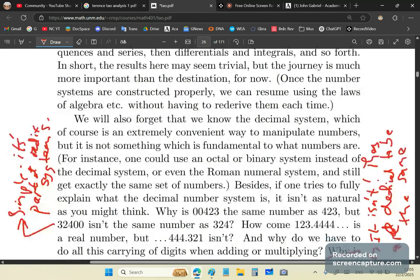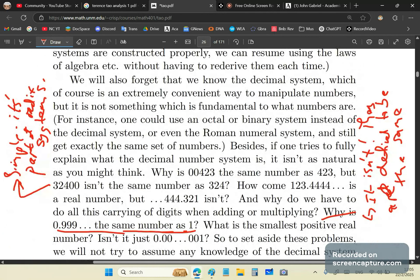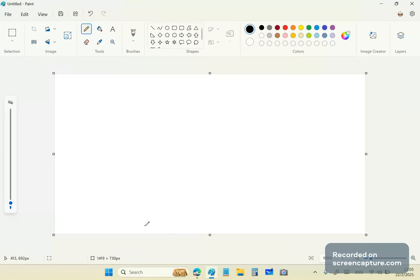So then he gets to this chapter and he says, we will forget that we know the decimal system. By the way, the decimal system is what they use in real numbers. And then he says, for example, isn't, besides, if one tries to fully explain what the decimal number system is, it isn't as natural as you might think. Actually, the decimal system, number system is very easy. Look, it's just a radix system. So it's a position based system, which these idiots have never understood. So basically in this first column, you represent units. And here you represent the first power of the base. So in this case, 10, in this case, hundreds, like so.